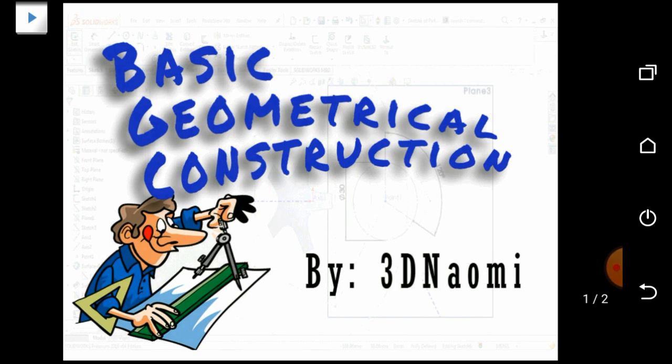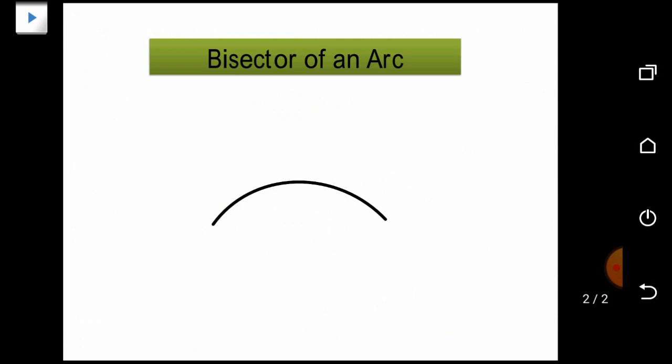For example, I want to find the bisector of this arc, and I will use this method that I'm going to show you.